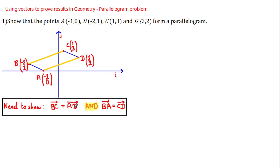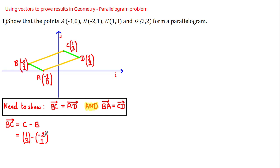We also need to show that the vector BA is equal to the vector CD. So, assuming you know how to calculate displacement vectors, let's calculate the vector BC. BC is equal to C minus B, which using column vectors is (1, 3) minus (-2, 1). That gives 1 minus (-2) = 3 and 3 minus 1 = 2, so BC = (3, 2).